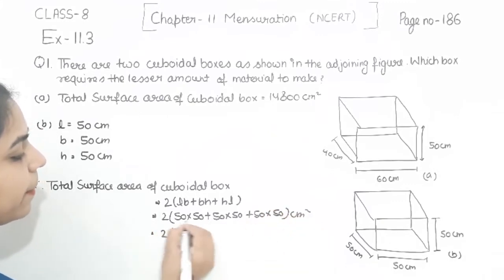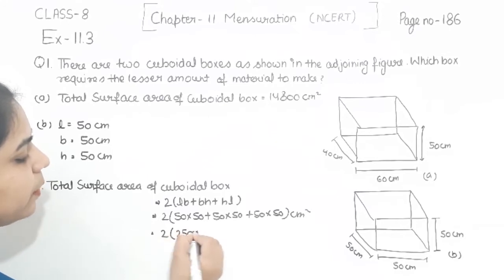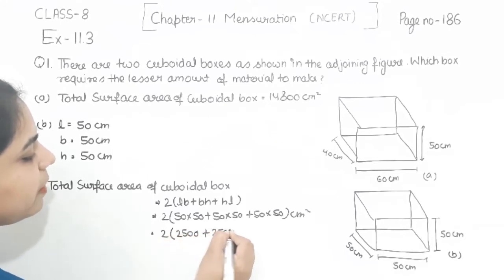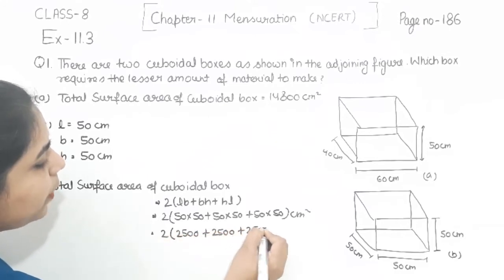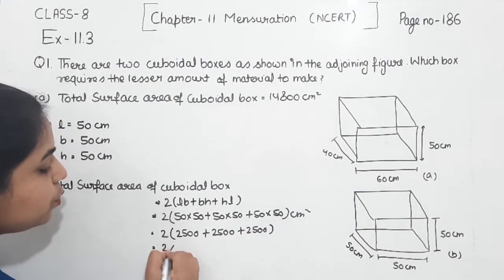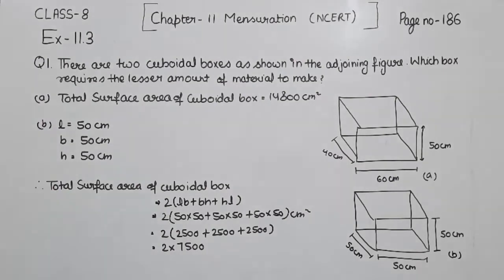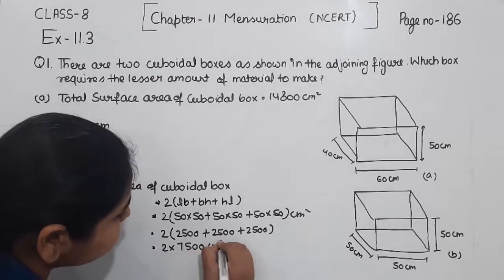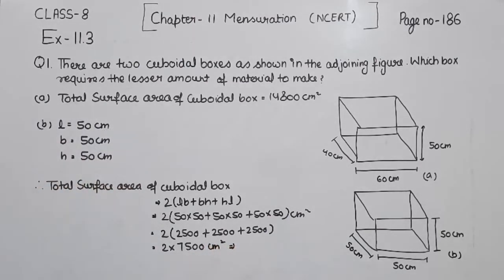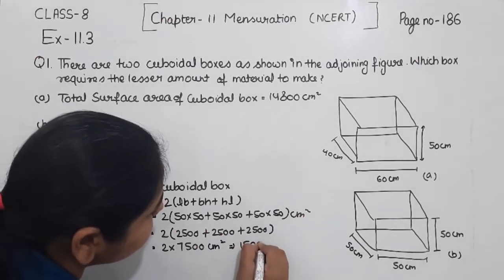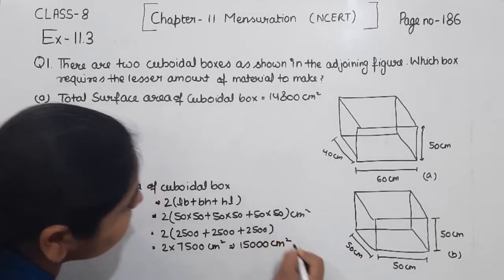So this is 2 × (2500 + 2500 + 2500). Adding the three terms: 2500 × 3 = 7500. Now multiplying: 2 × 7500 gives the final value of 15,000 centimetres squared.